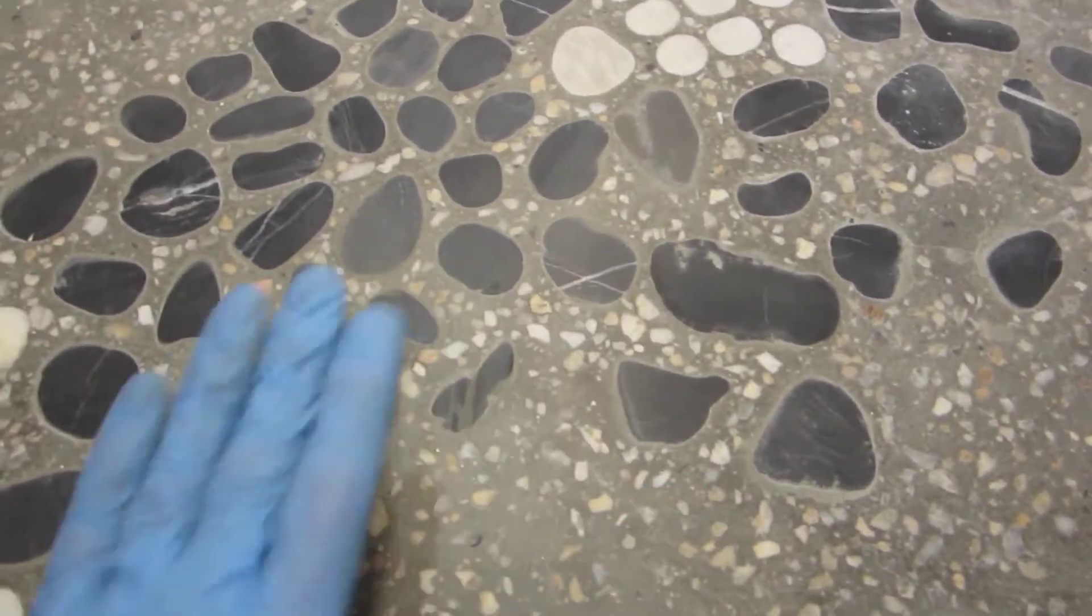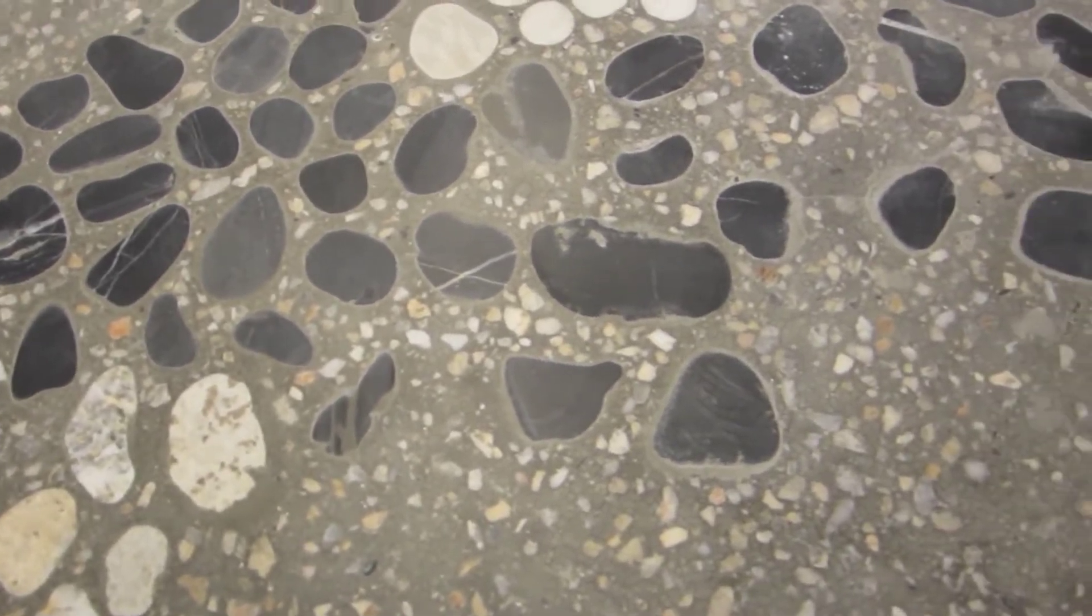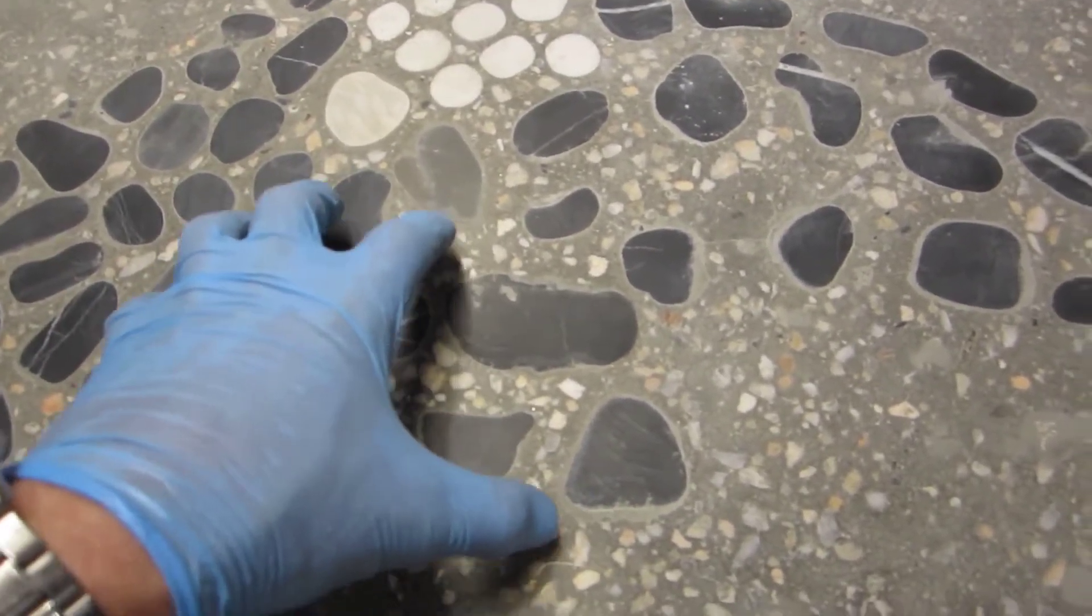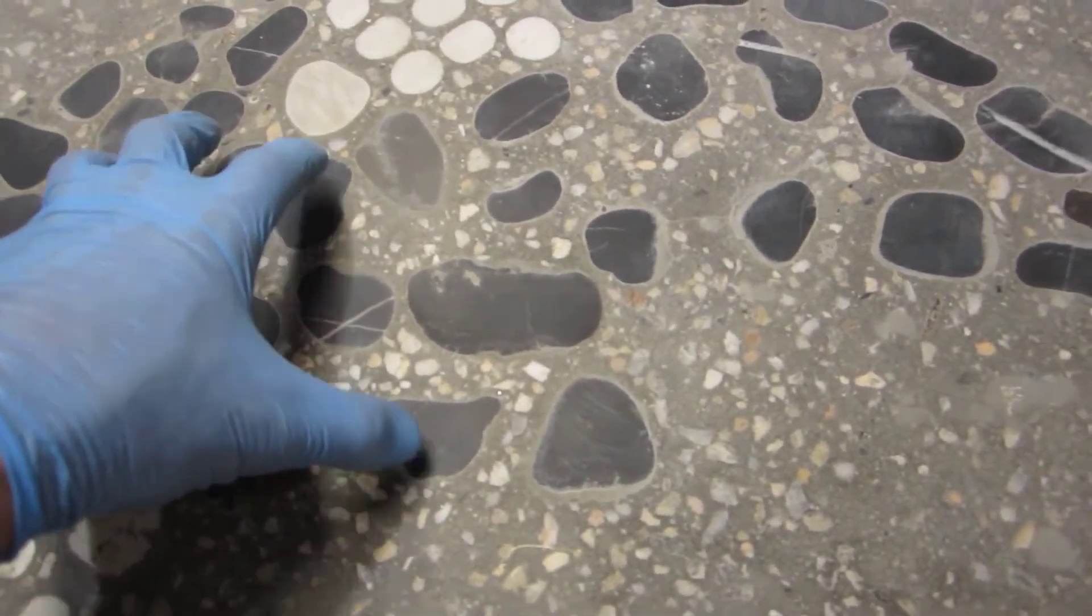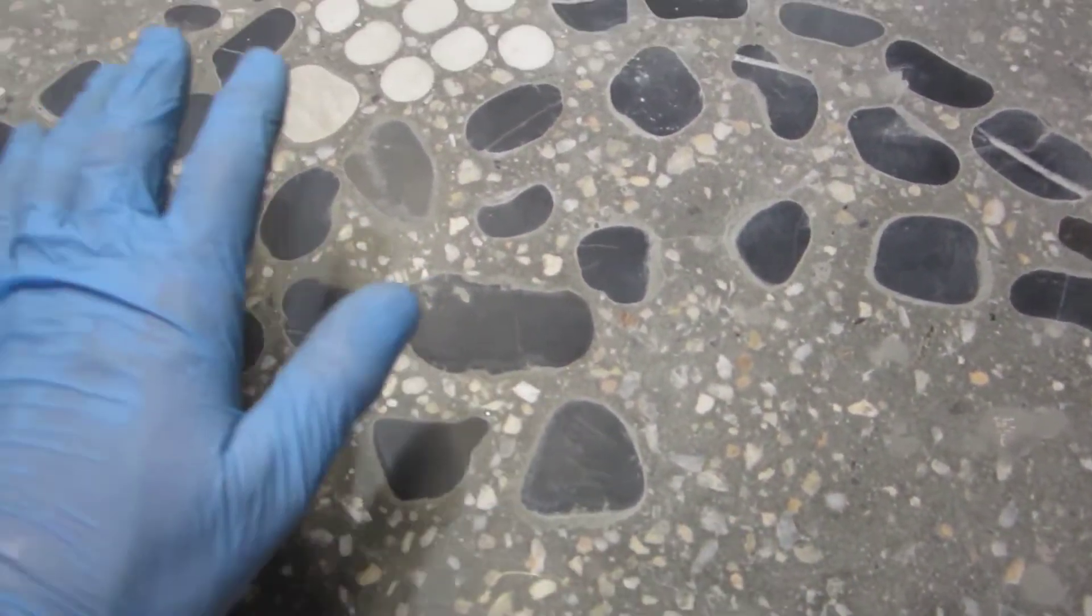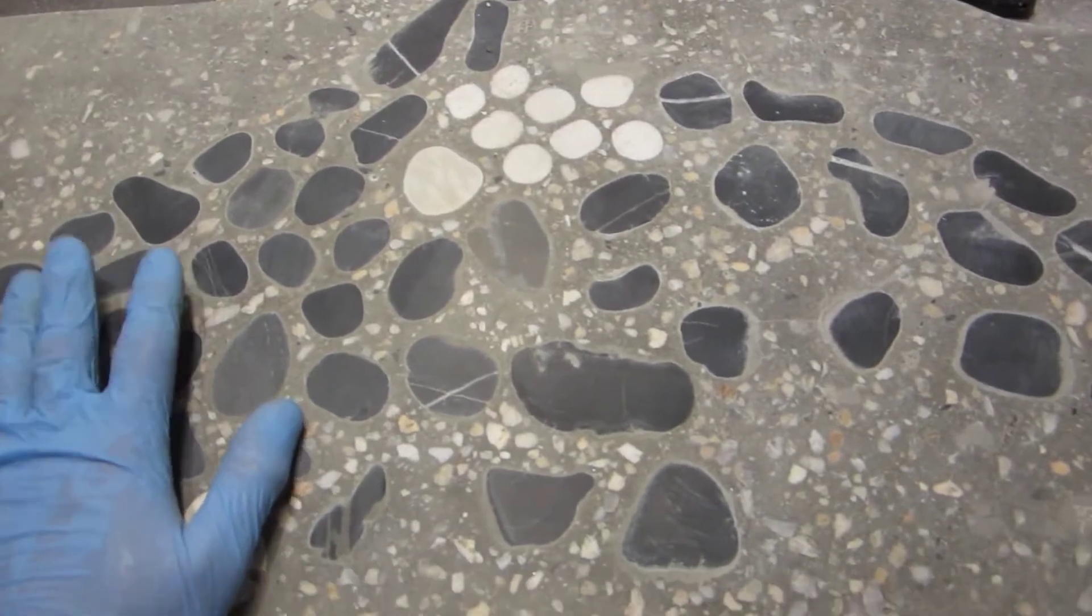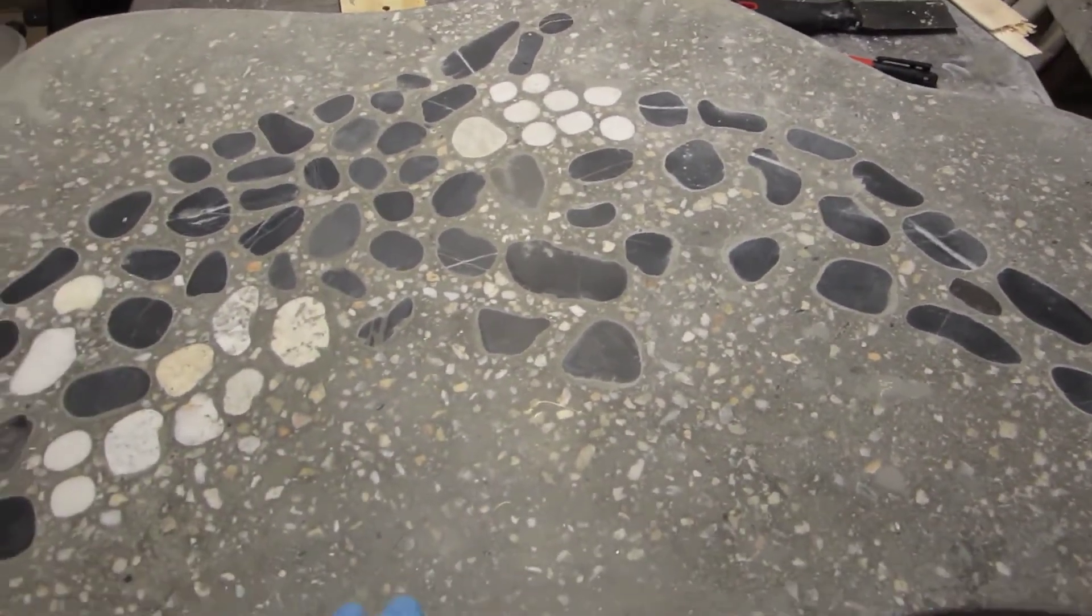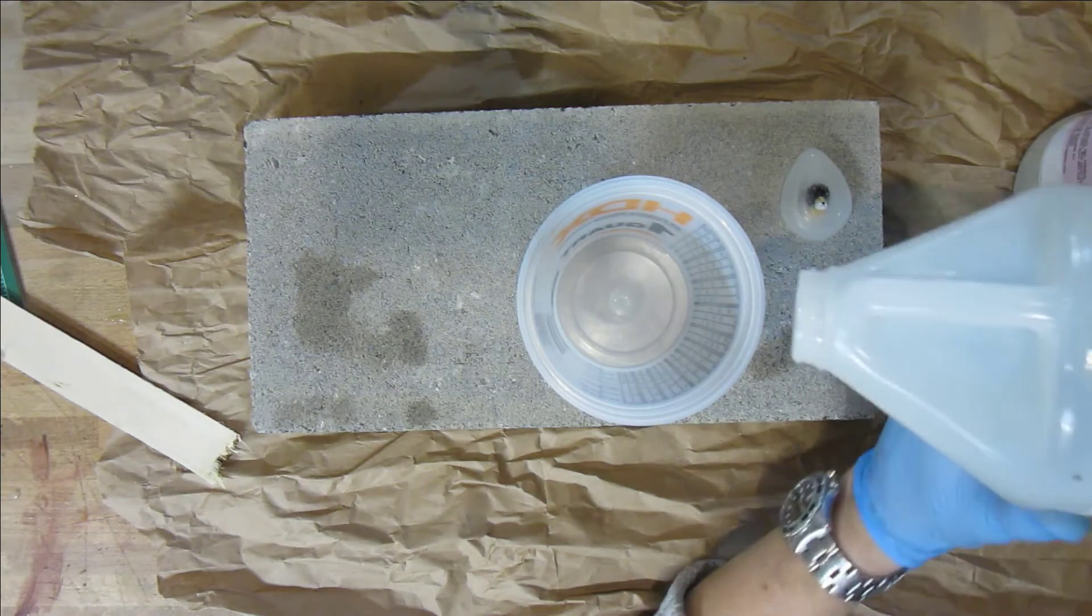So I'm hoping that I can cover this with clear epoxy which will do two things: it will bring out the contrast between the black rocks and the gray concrete, and it'll smooth over those ridges.